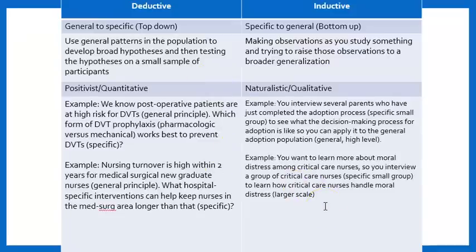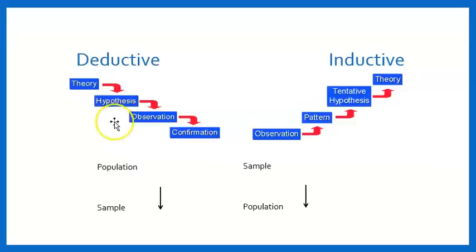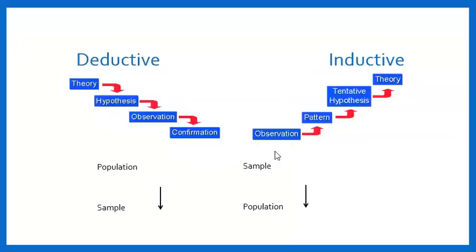Here's another way to look at it. In quantitative research, deductive reasoning starts with a theory, which leads to the development of hypotheses, then data collection and observation from participants to either confirm or fail to confirm the hypothesis. In inductive qualitative research, we observe a small group of participants, see patterns from interviews with that small group, and from that develop tentative hypotheses and eventually theories. It's completely the reverse: increasing focus versus decreasing focus.